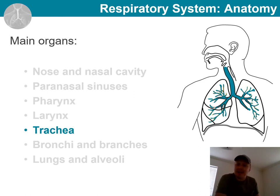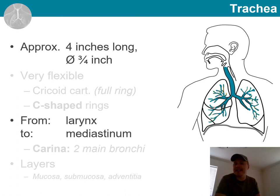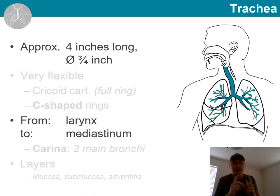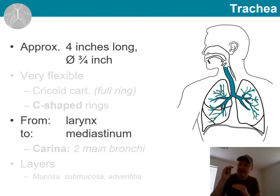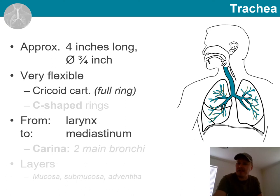Now we are ready to start talking about the trachea — our windpipe, as it is sometimes called. The trachea connects the larynx to the lungs. An average adult's trachea is about 2.5 cm in diameter and between 12 and 13 cm in length. It is very flexible, with the only complete ring being at the most superior part — the cricoid cartilage.